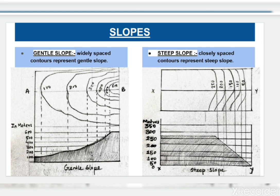The first is gentle slope. Widely spaced contours represent a gentle slope. As you can see in this diagram, the contour lines are widely spaced and the number mentioned indicates the height of that place. Widely spaced contours represent gentle slope, while closely spaced contours represent steep slope.